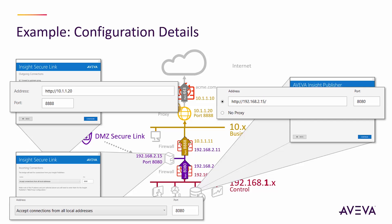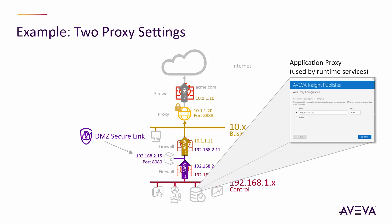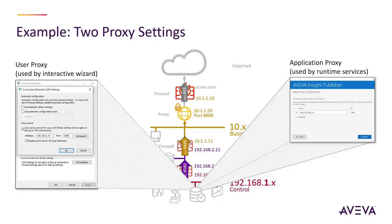When we talk about the proxy, there are really two proxy settings that apply on the publishing side. The one just mentioned is used by the runtime and is configured in the publisher itself. Older versions of Wonderware Historian don't have this proxy setting as part of the setup wizard, so you may need to specify the proxy in a configuration file — look online for details about that. The publisher's interactive configuration also needs a proxy to be able to reach the internet, and that would use the user proxy configured in Windows.